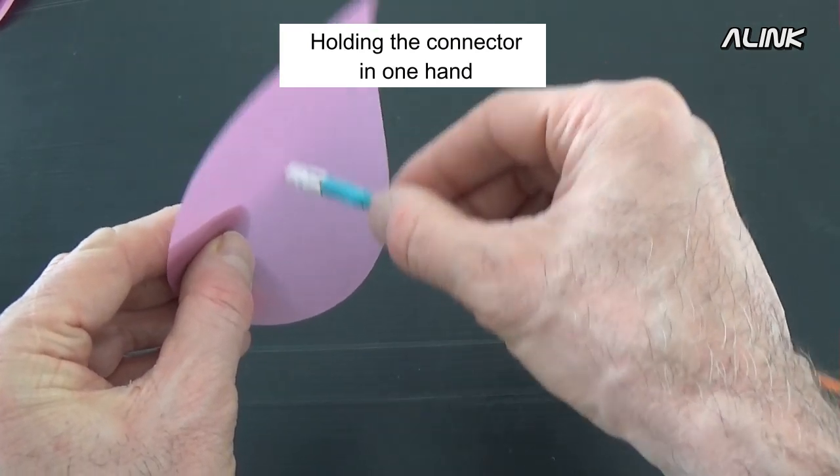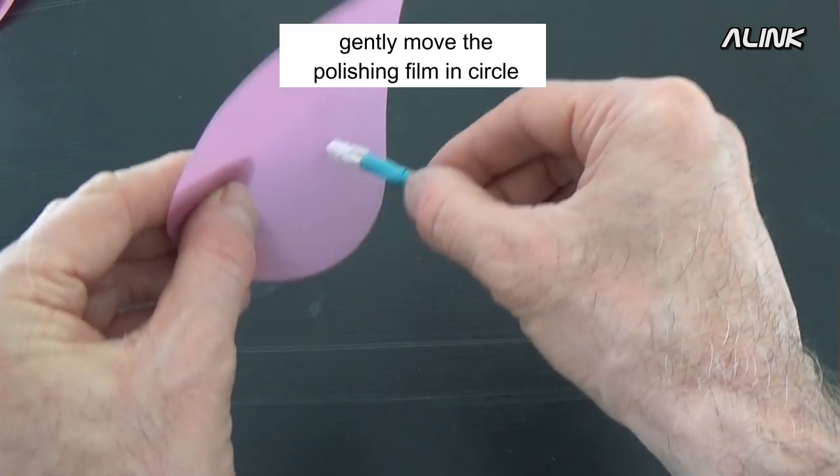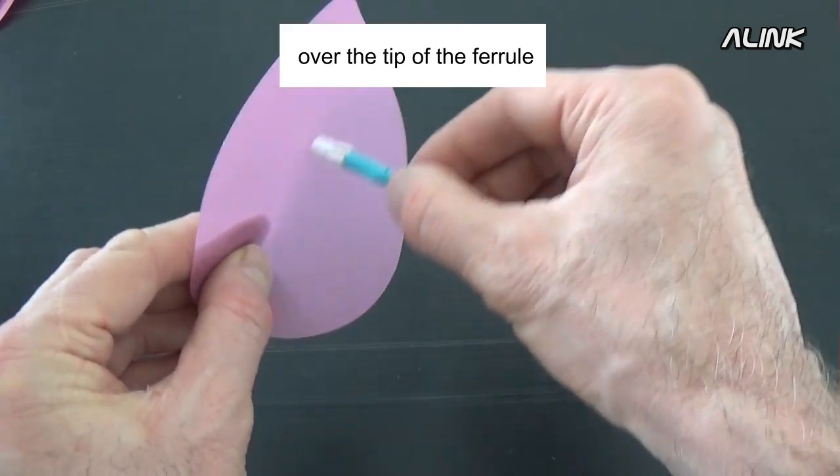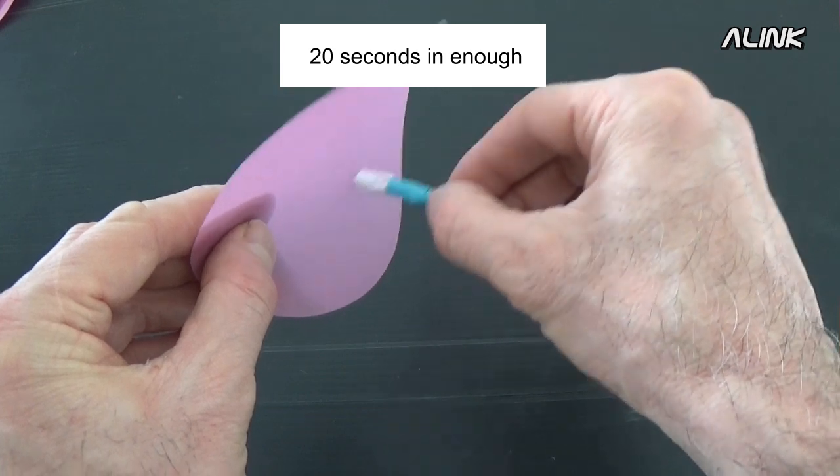Take the 15 micron polishing film. Holding the connector in one hand, gently move the polishing film in circles over the tip of the ferrule. 20 seconds is enough.